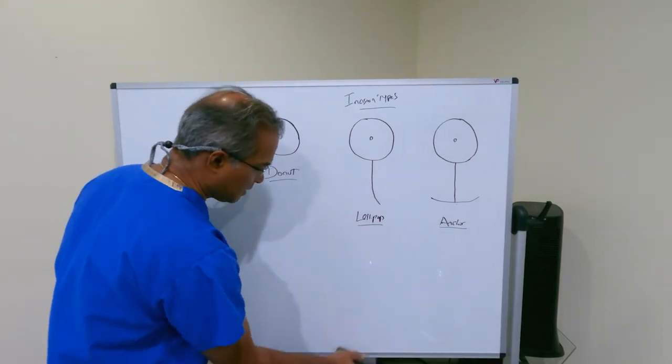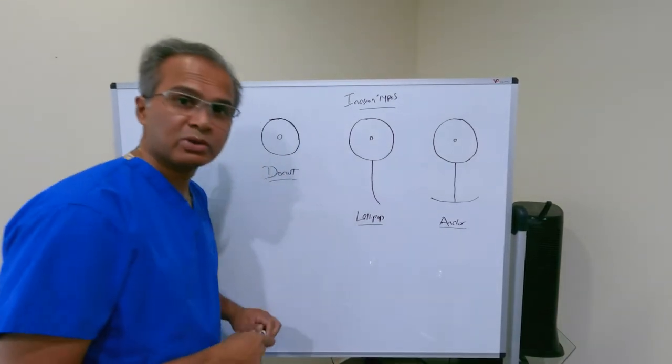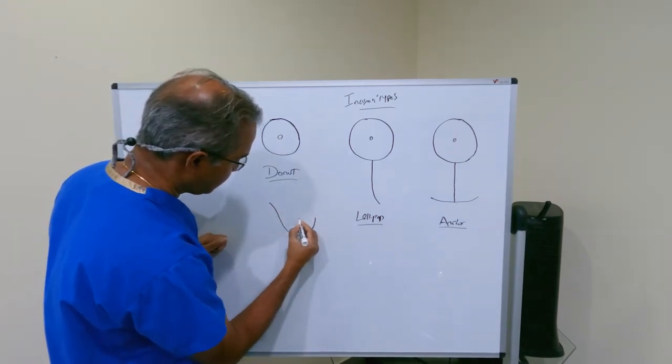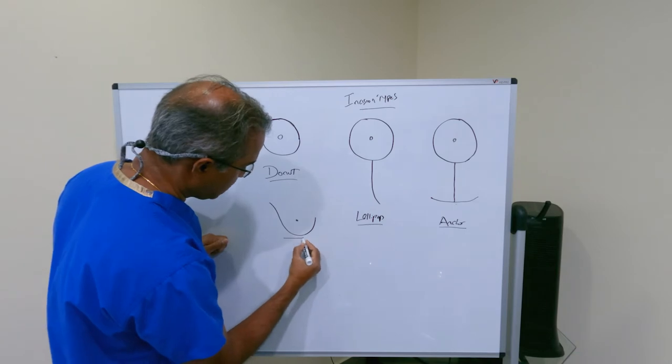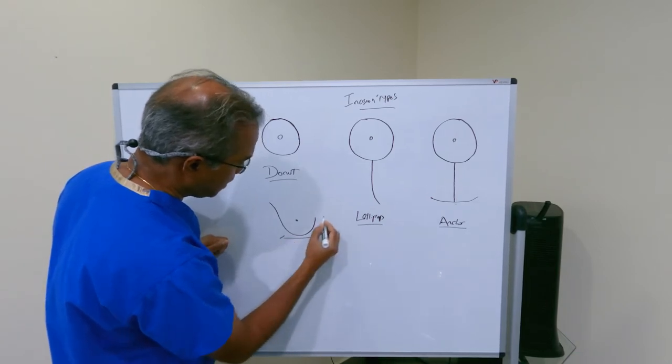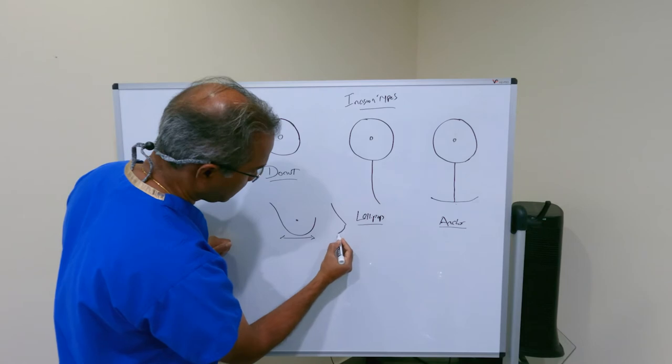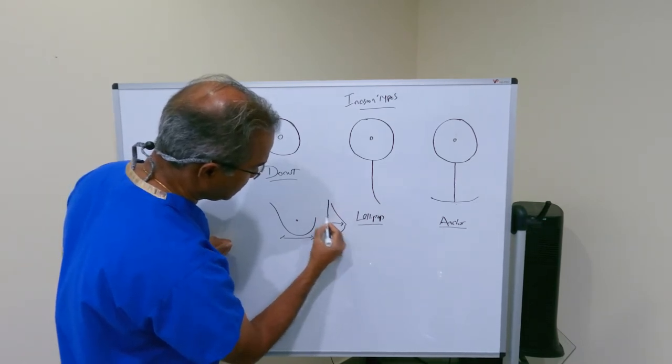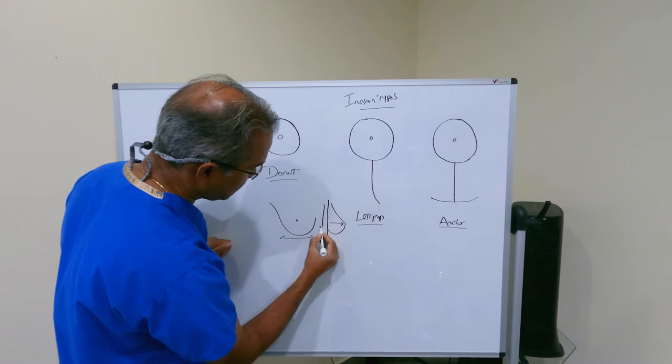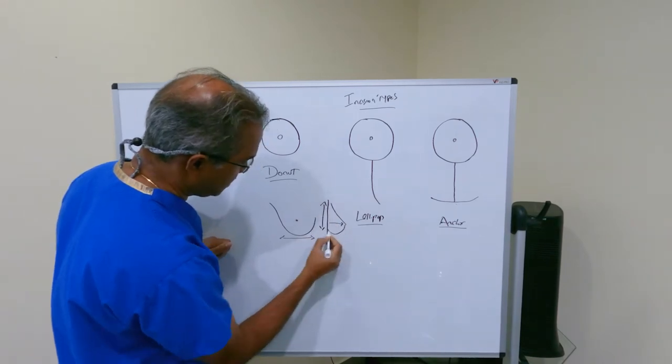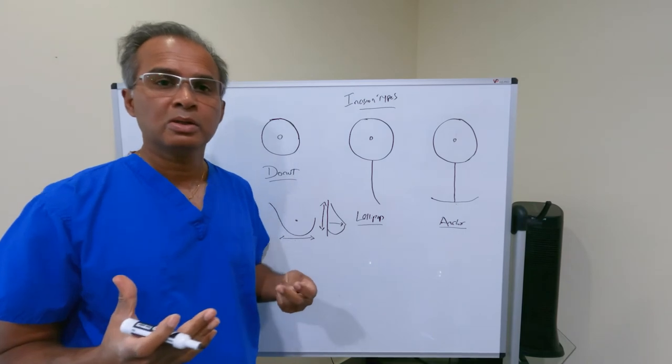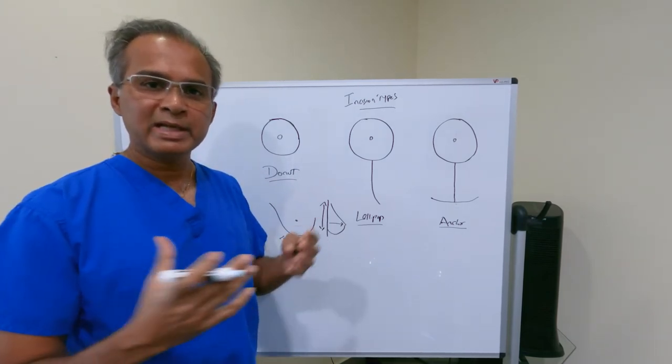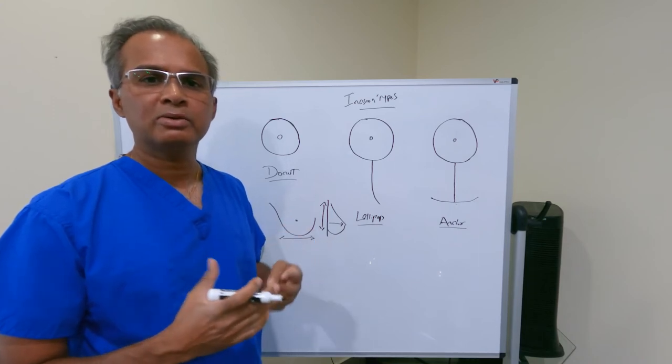So why are these decisions made as to what type of scars are used? If you look at a breast, it has width to it. A breast on the side has projection to it. It also has height to it - three different measurements. It's a three-dimensional structure, and if you want to fix it you have to think three-dimensionally.